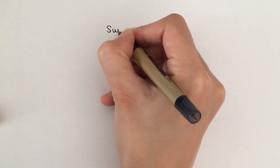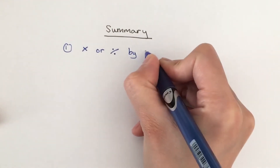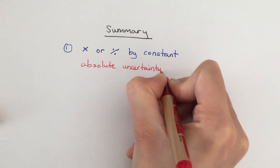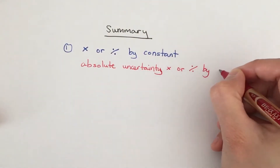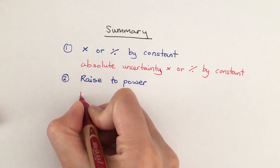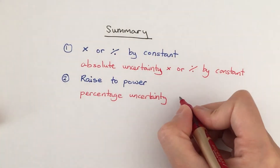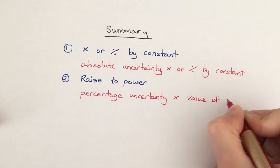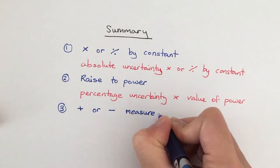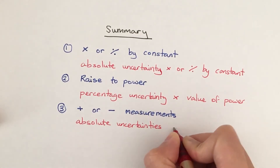Let's summarize the four rules we've just learned. Rule 1: if we multiply or divide a single measurement by a constant, we multiply or divide the absolute uncertainty by that same constant. Rule 2: if we raise a single measurement to a certain power, we multiply the percentage uncertainty by the value of that power — for example, if I do radius cubed, I multiply the percentage uncertainty of the radius by 3. Rule 3: if we add or subtract measurements together, we add their absolute uncertainties together.